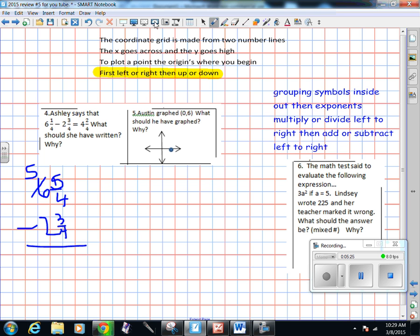The next question, Austin graphed (0,6). What should he have graphed? So I think about my coordinate grid song. In the coordinate grid song: coordinate grid is made from two number lines, the X goes across and the Y goes high, plot a point, the origin's where you begin, first left or right then up or down. So I should start at the origin, which is here, and then go first left and then up.